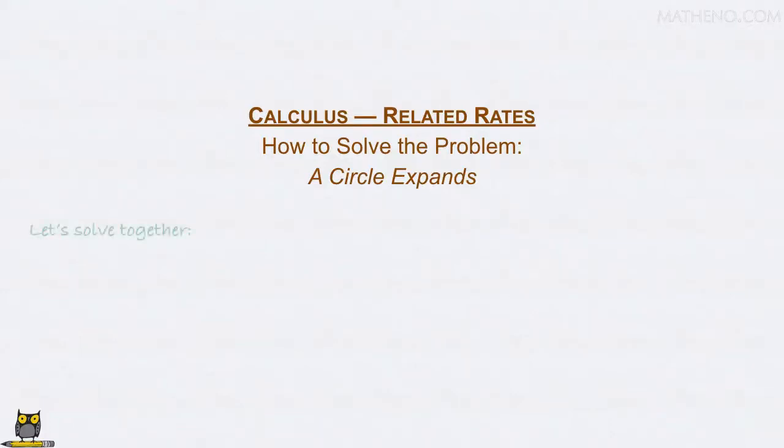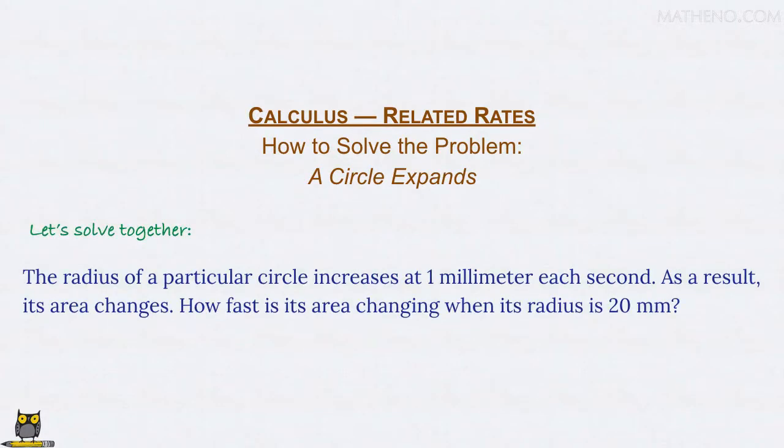Let's solve together our first related rates problem. The radius of a particular circle increases at one millimeter each second. As a result, its area changes. How fast is its area changing when its radius is 20 millimeters?